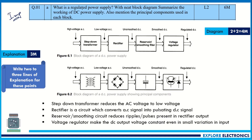The question asks: what is regulated power supply with need, block diagram, and summarize the working of DC power supply, also mentioning the principal components used in each block. First you need to write what is regulated power supply. A regulated power supply takes a high voltage AC input and produces a constant regulated DC voltage as output. Write the definition first — that carries one mark.